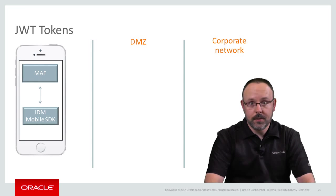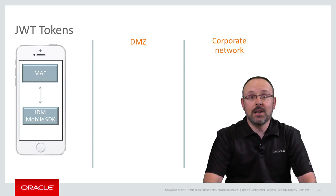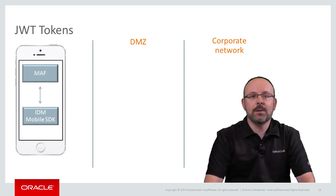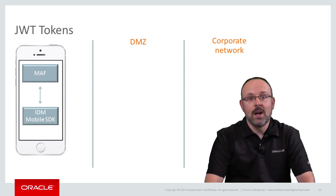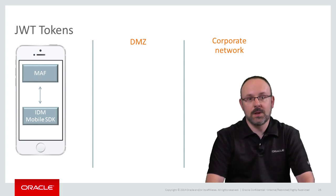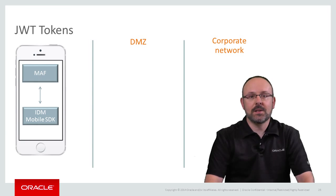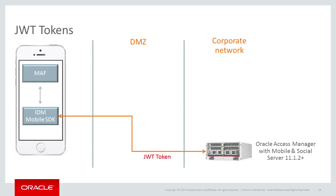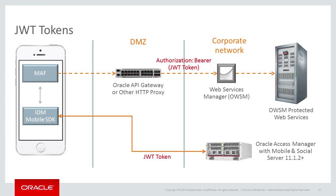JWT stands for JSON Web Token. Each token represents a set of claims as a JSON object that is encoded as a base64 URL, digitally signed, and possibly even encrypted. Security credentials are passed to the server for authentication, and the server will return a token if the process is successful. The application can then use the token to gain access to back-end services configured to accept it, keeping the credentials secure as they are only transmitted once. This scenario also relies on the mobile and social connection type for authentication, but it uses a JWT token instead of an OAM user token. Most web service stacks will not accept JWT tokens out of the box, so you need to use Oracle API Gateway or an OAuth-compatible proxy to process the token and access secured web services.